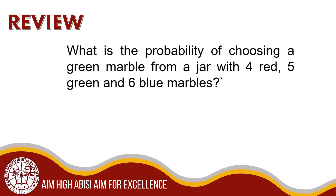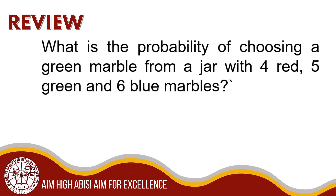What is the probability of choosing a green marble from a jar with 4 red, 5 green, and 6 blue marbles, if 1 marble is chosen at random? The probability of choosing a green marble is 5 out of 15, or 1 third. I got 15 by adding up all the marbles: 4, 5, and 6.